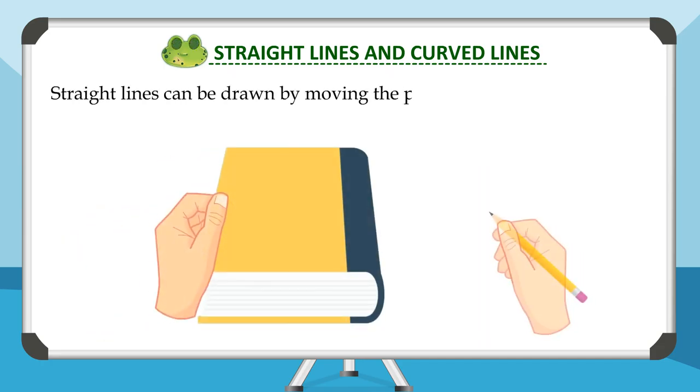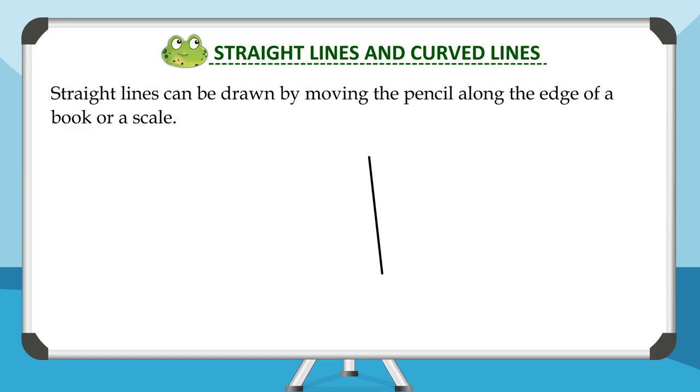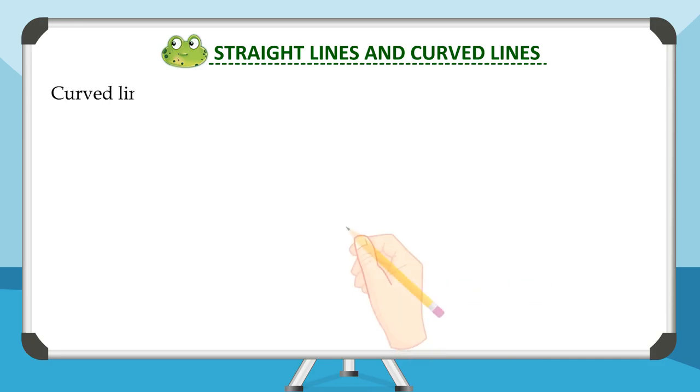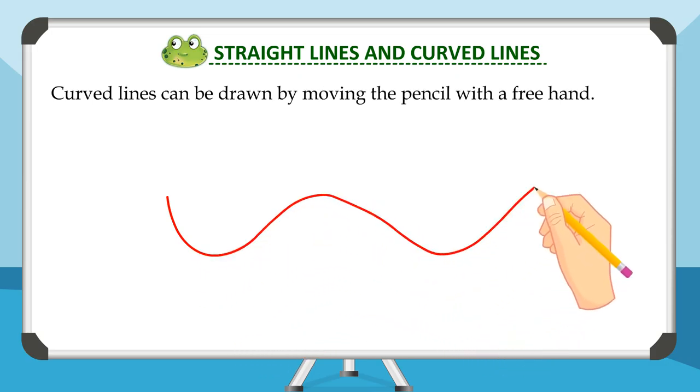Straight lines can be drawn by moving the pencil along the edge of a book or a scale. You need a ruler to draw a straight line. Curved lines can be drawn by moving the pencil with a free hand.